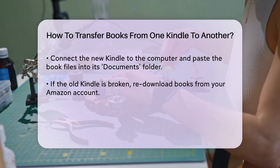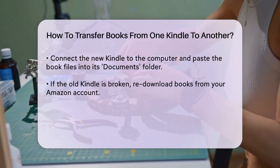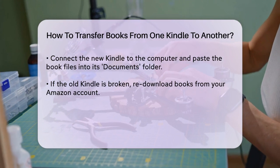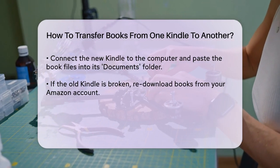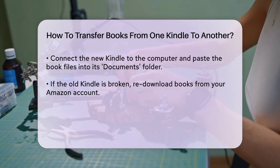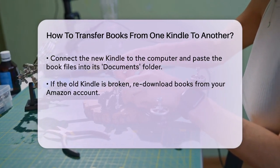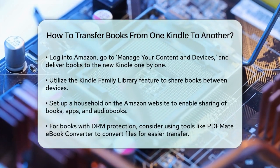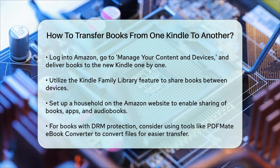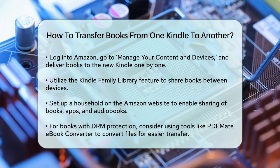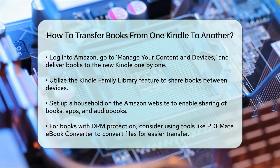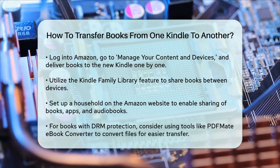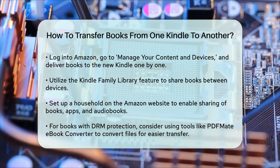You can also use the Kindle Family Library feature to transfer books. Go to the Amazon website, navigate to your account, Manage your content and devices, settings, household and family library, and set up a household. Once you've added the second Kindle to the household, you can share books, apps, and audiobooks easily.